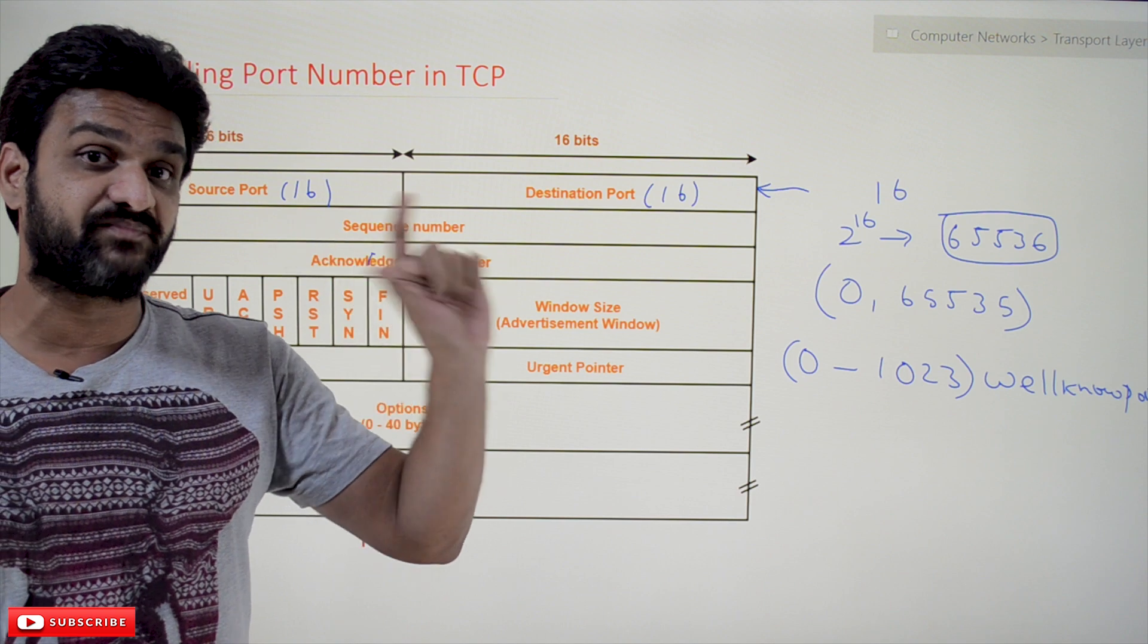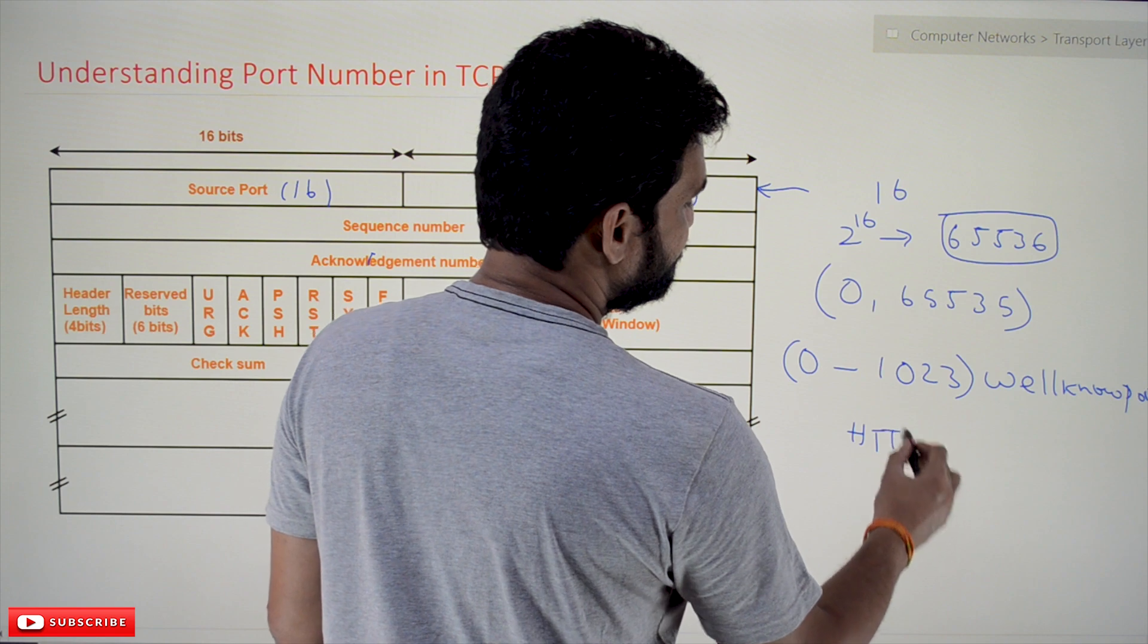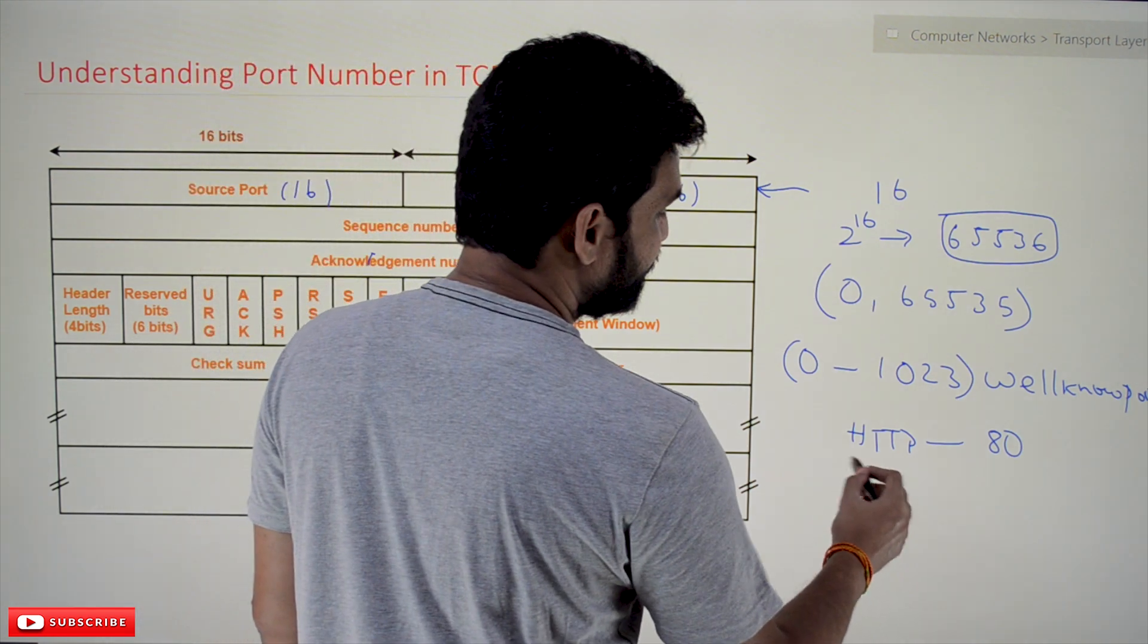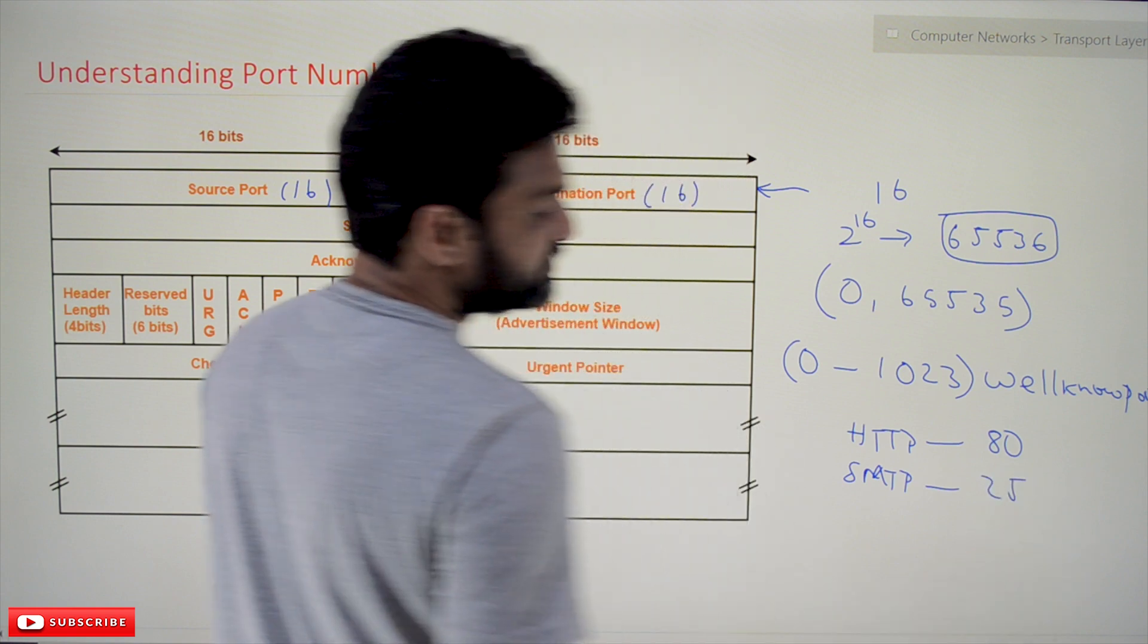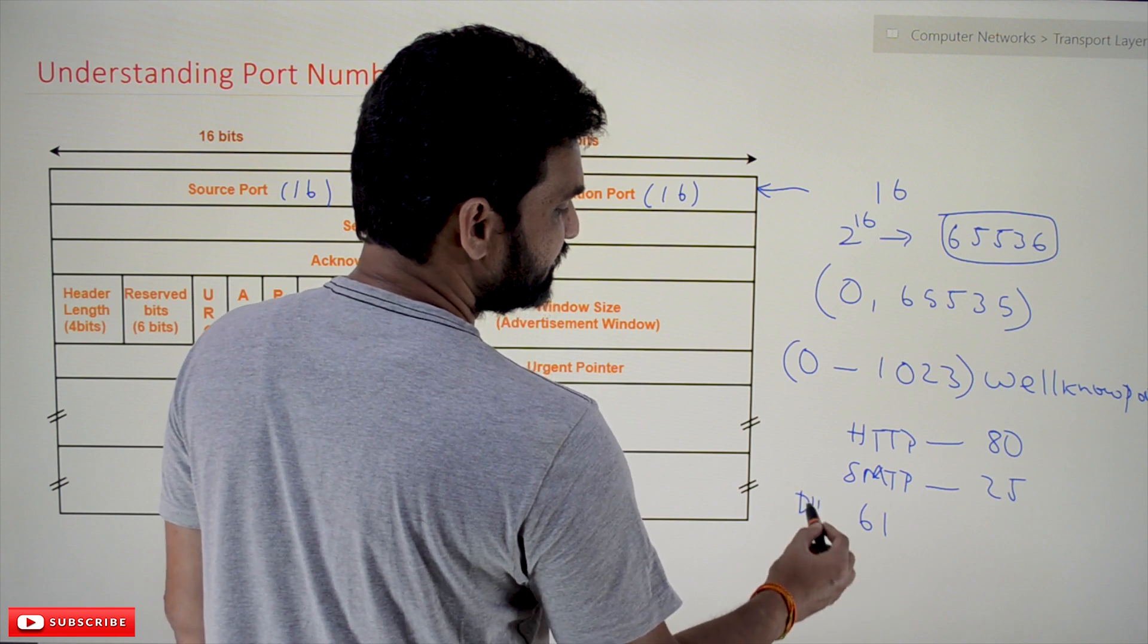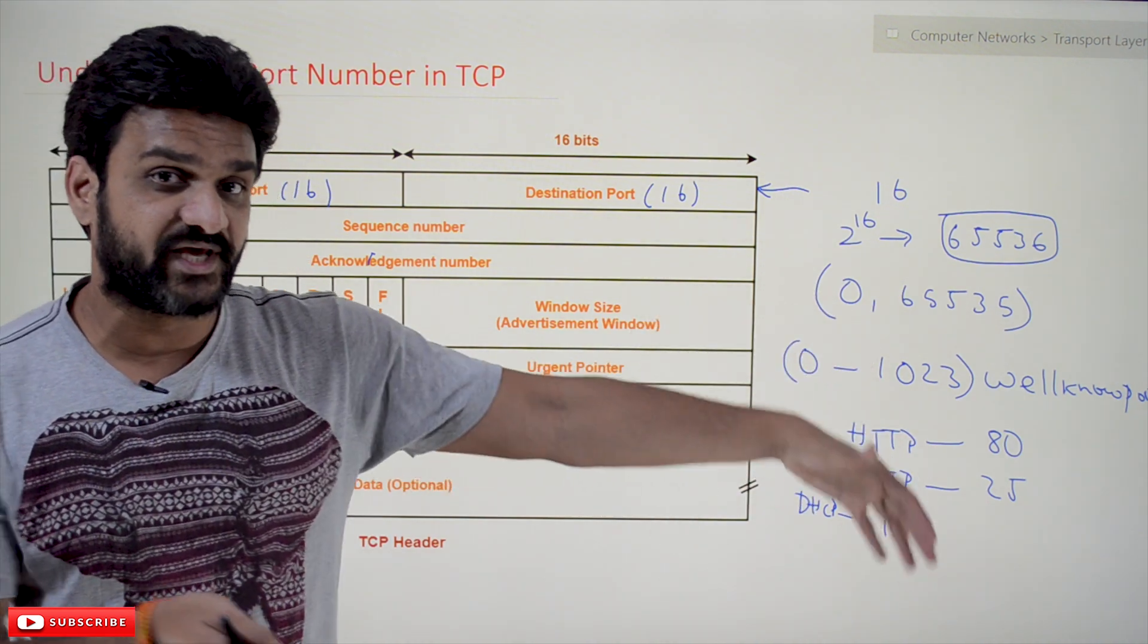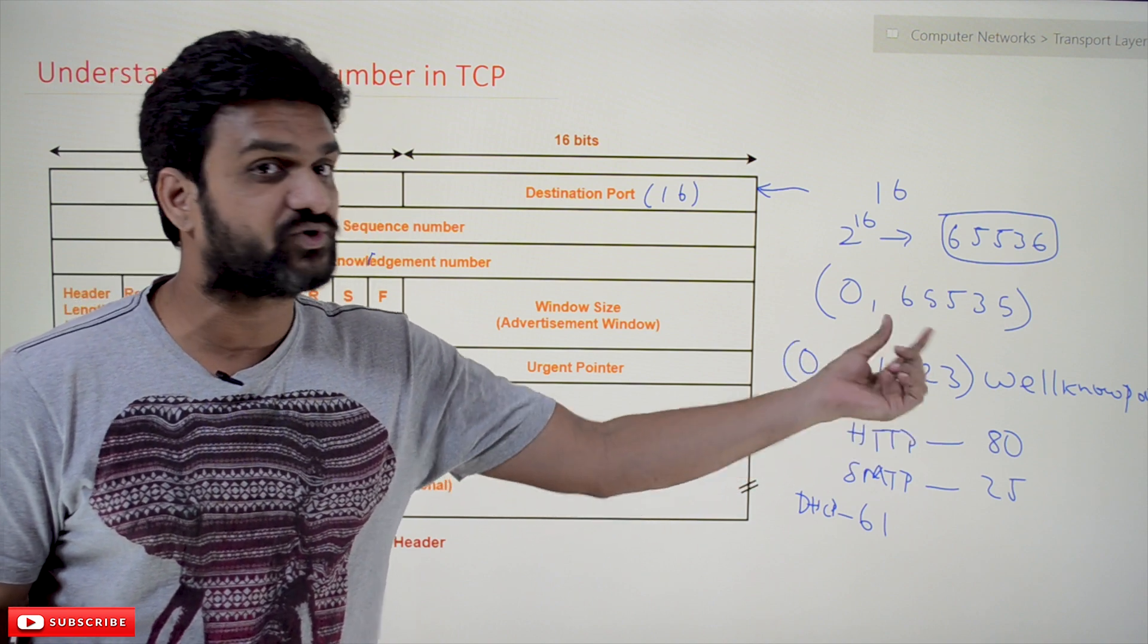For example, if you take HTTP, it is going to use port 80. Similarly, SMTP is going to use port 25. For DHCP it is port 61. These are the well-known port numbers regularly used in communication, so we have assigned 0 to 1023 for these port numbers.